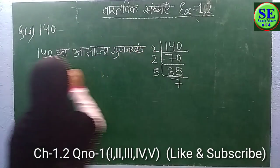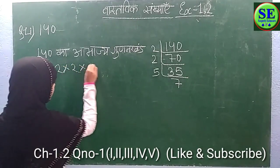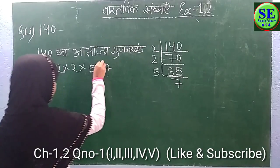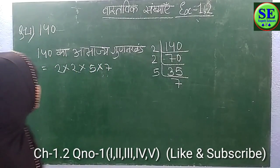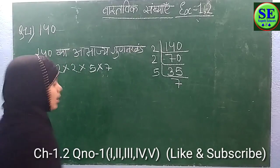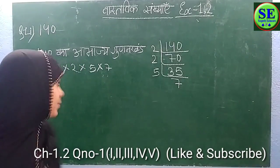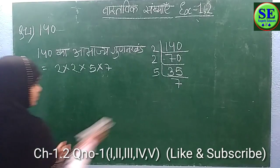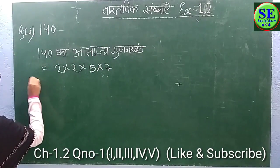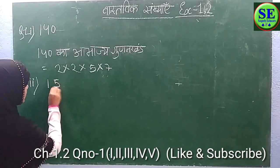Is equal to 2 into 5 into 7. This is our 140. Now we have question number 2, so question number 2 is 1.02, that is 156.